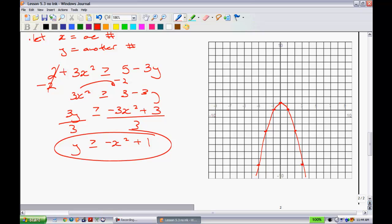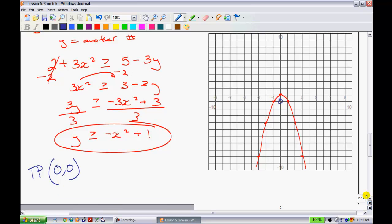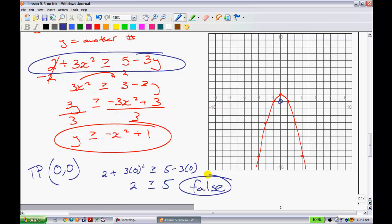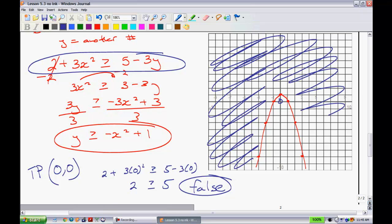And now we have to figure out do we shade above or below this thing. So the test point I will use, this one actually does work nicely here. You can use this point as your test point. So my test point will be 0, 0. Using that test point, I'll go back to my original equation. The original equation, FYI, was right up here. So we have 2 plus 3 times 0, all squared, is greater than or equal to 5 minus 3 times 0. So this gives me 2 is greater than or equal to 5. That is false. Since it is false, that tells me that I'm going to shade away from my line right here. So I end up getting this part as my shaded region.